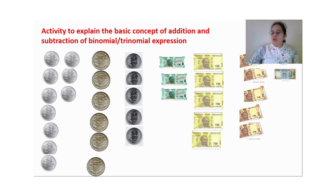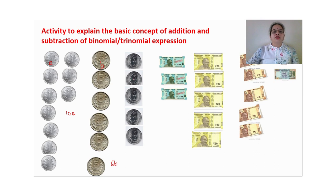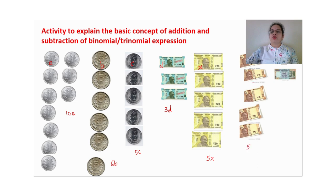The advantage of collecting like this is that counting becomes easy. One-rupee coins: 1,2,3,4,5,6,7,8,9,10 — so 10, denoted by A → 10A. Five-rupee coins: 1,2,3,4,5,6 → 6, denoted by B → 6B. Two-rupee coins: 1,2,3,4,5 → 5, denoted by C → 5C. 50-rupee notes: 1,2,3 → 3D. 20-rupee notes: 1,2,3,4,5 → 5X. 10-rupee notes: 1,2,3,4,5 → 5Y. 100-rupee notes: 1,2 → 2Z.